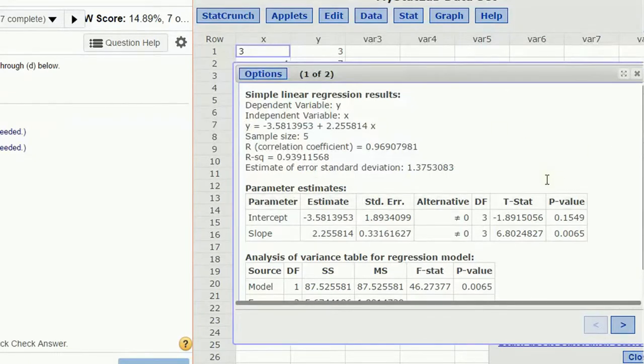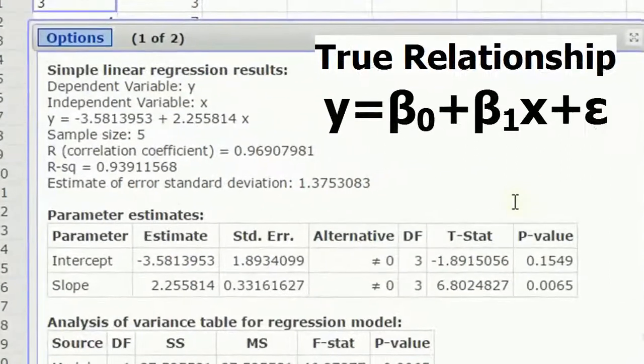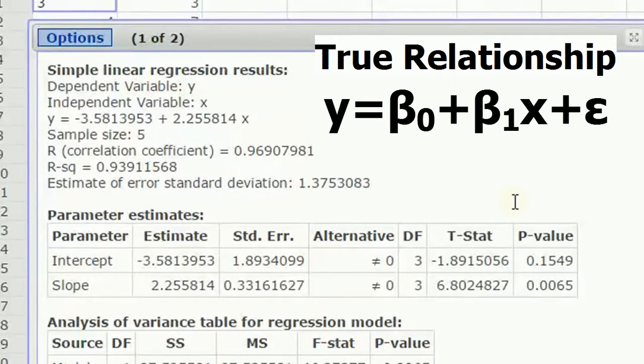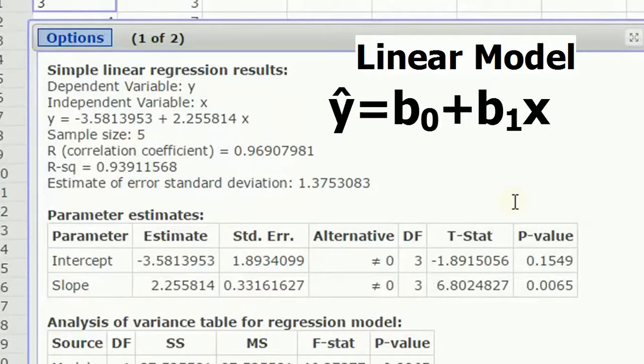Now, we're going to look at this in a slightly different way. We're not going to just look at the output at the top, but we're going to go down to the parameter estimates. Throughout all of statistics, we're trying to do inference about parameters that we can't see, but we know are there, like we don't know the population mean. It's just something we can estimate. Well, if there is a linear relationship between the x and the y, then there is a slope and there is an intercept. We call those beta 0 for the intercept and beta 1 for the slope.